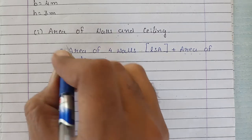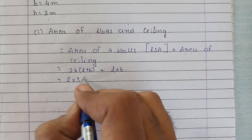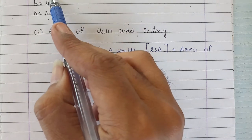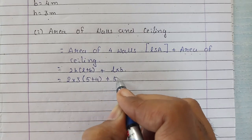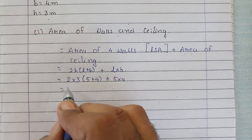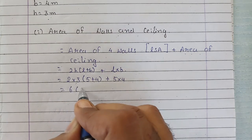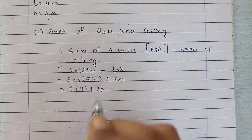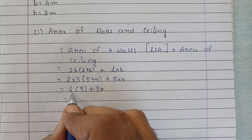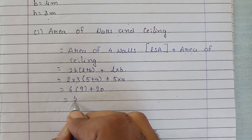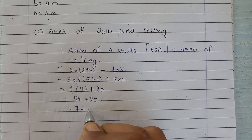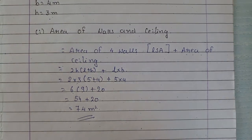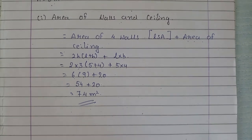Now by applying the values, we have 2 into 3 (height), into bracket 5 plus 4 (L plus B), plus 5 into 4 (L into B). That gives us 6 into 9, plus 20, which equals 54 plus 20, which is 74 meter square. So the total area of walls and ceiling is 74 meter square.